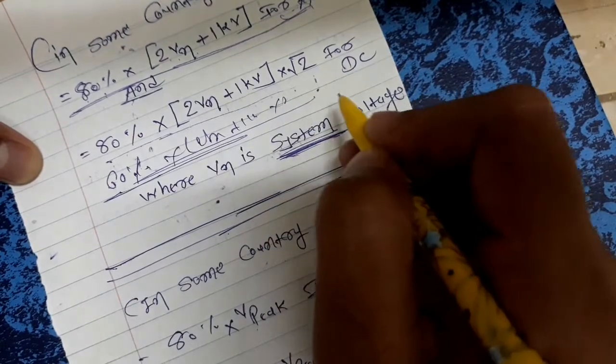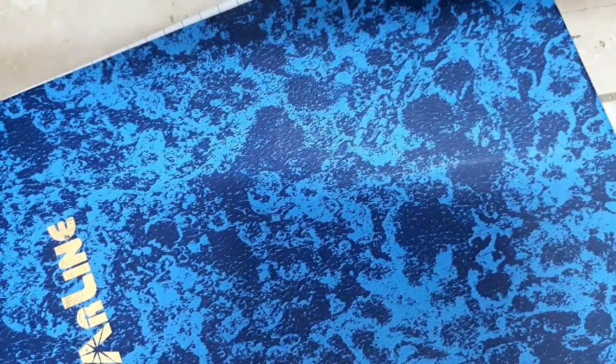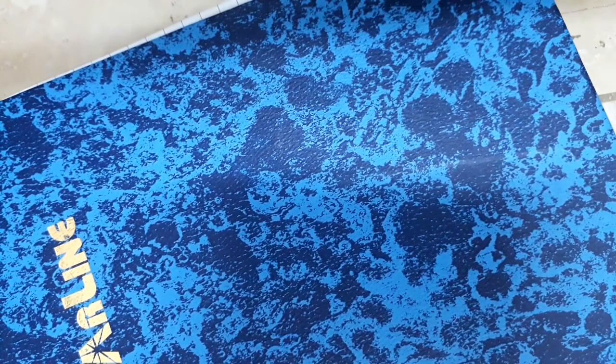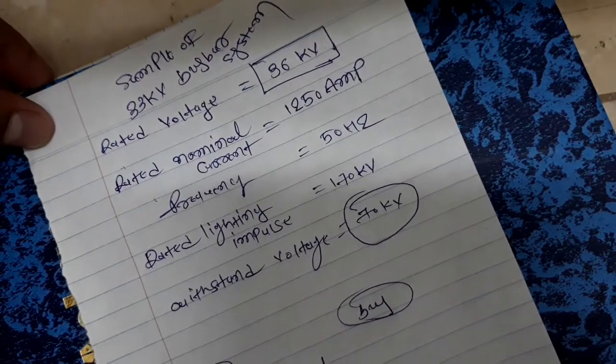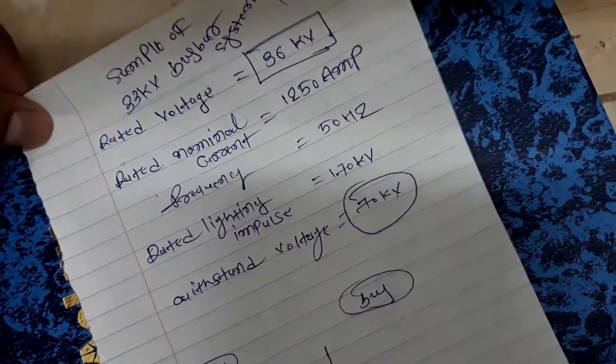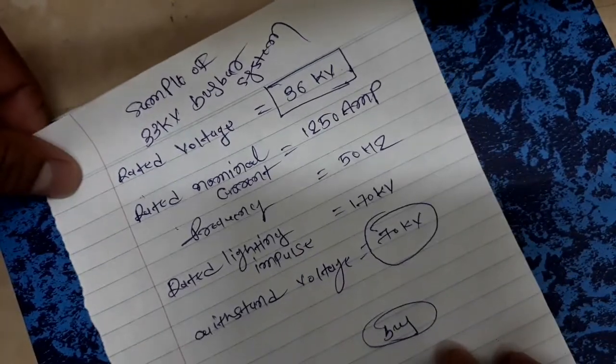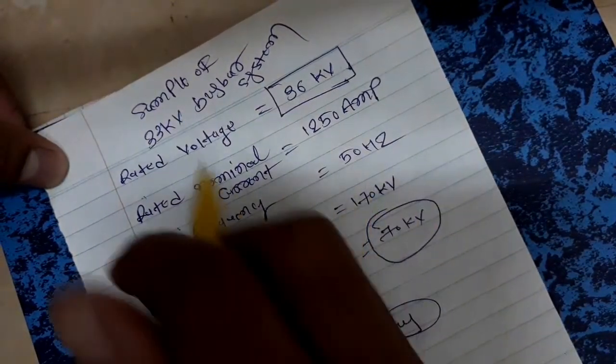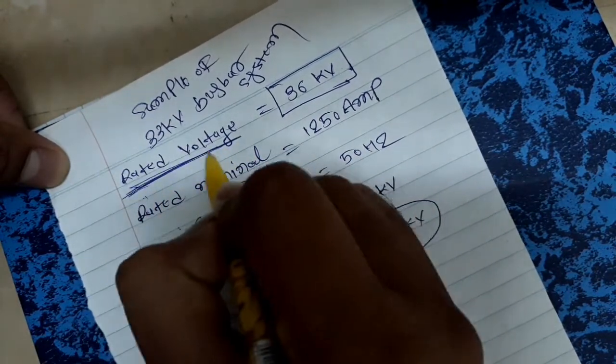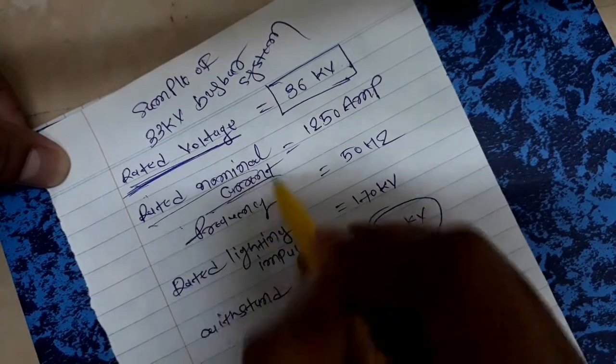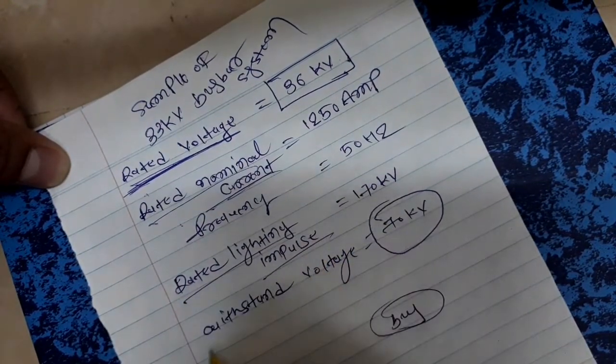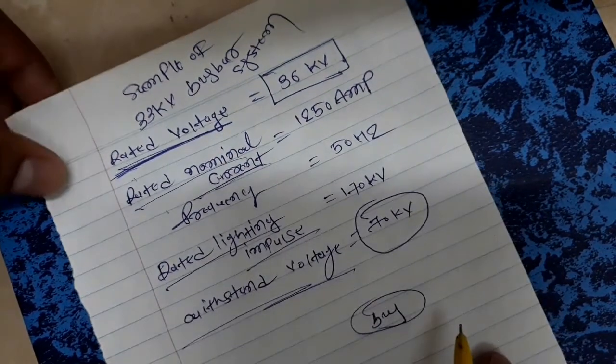The formula can also use 90% for certain tests. We consider rated voltage, rated nominal current, and rated lightning impulse withstand voltage.